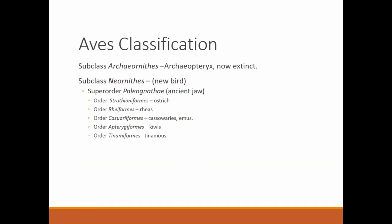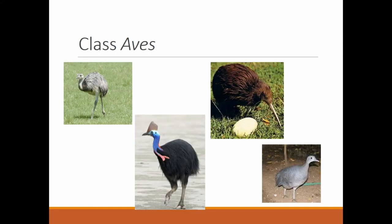Classification of Aves: Subclass Archaeornithes — the Archaeopteryx, now extinct — is believed to be one of the very primitive birds. It had a digit on its elbow, had teeth, and was probably one of the first organisms to have feathers. Subclass Neornithes are the new birds. Super order Paleognathae (ancient jaw) includes: order Struthioniformes (ostriches), Rheiformes (rheas), Casuariiformes (cassowaries or emus), Apterygiformes (kiwis), and Tinamiformes (tinamous) — all flightless birds. Representatives include the ostrich, cassowary, and kiwi.